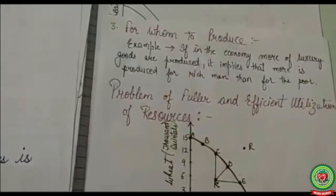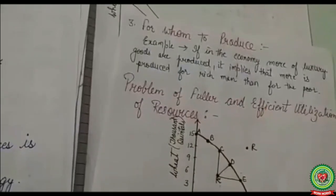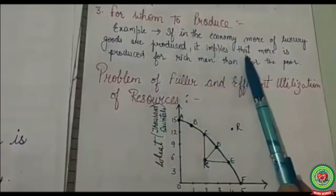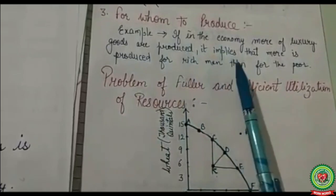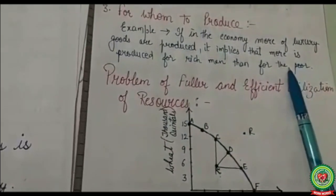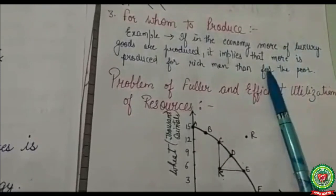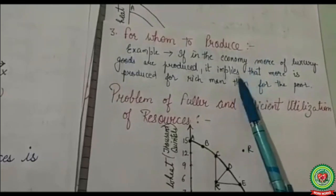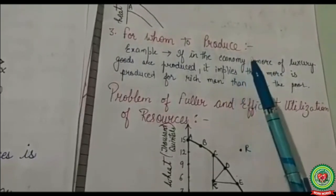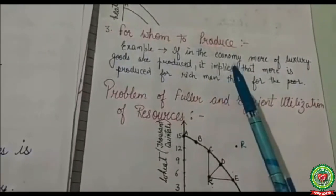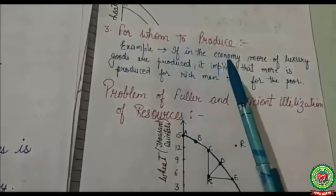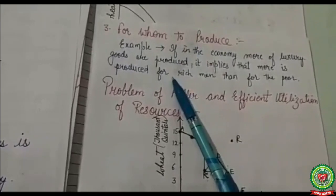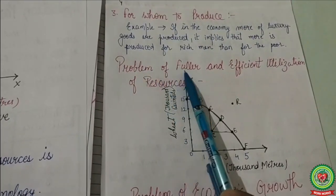The third problem is for whom to produce. If the economy produces more luxury goods, it implies that more is produced for rich people than for the poor. The economy can shift resources from the production of luxury goods to the production of necessary goods, so that the Production Possibility Curve operates more equitably in the economy.